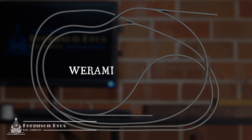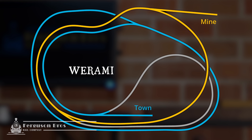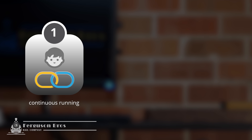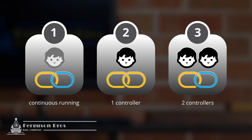In the fictitious town of Where Am I, there are two loops. One loop is for transporting mining material down the mountain, and the other loop simulates a train coming into the town. To keep things interesting for operators, we wanted to allow for a few possibilities: allow two trains to run continuously on one loop each, allow a single operator to control the entire layout with one controller, or allow two operators to run trains at the same time with their own controllers.